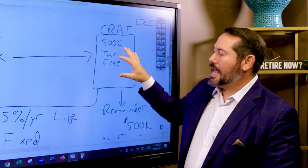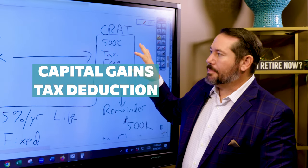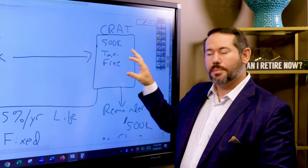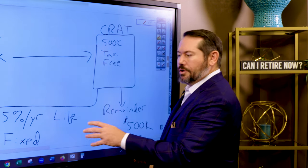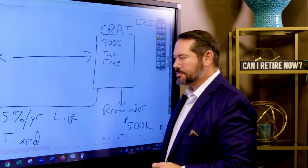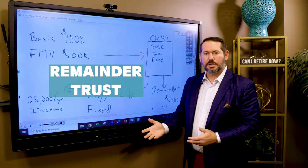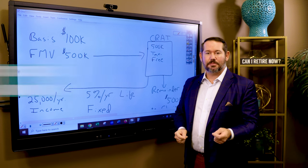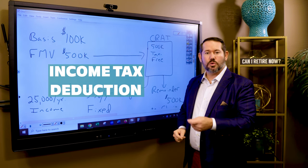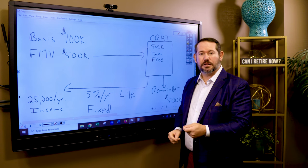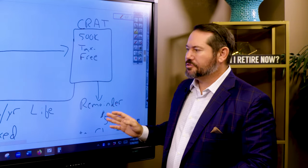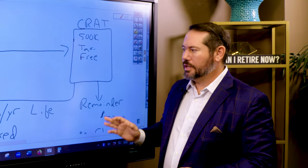We not only get a capital gains tax benefit on the sale of the stock inside the charitable remainder trust — there is also an actuarial calculation that takes place. It's called a remainder trust, so you also receive an income tax deduction today, subject to charitable gifting AGI limitations, based on the remainder value from this actuarial calculation.